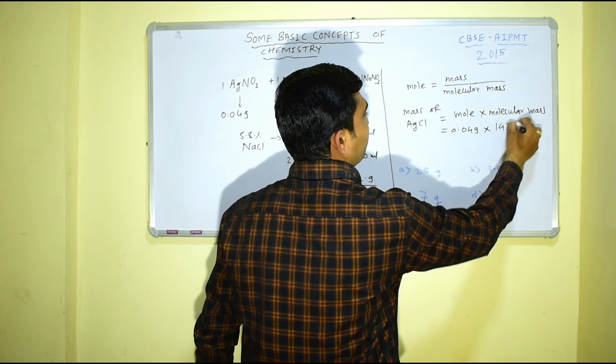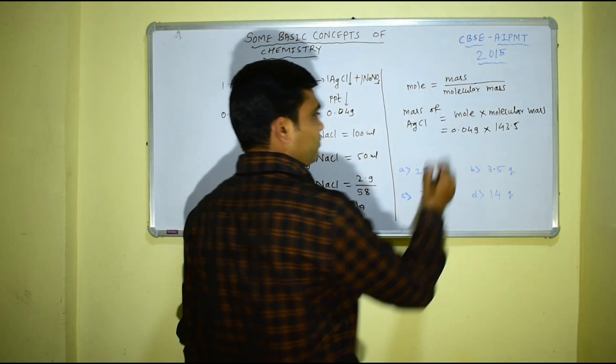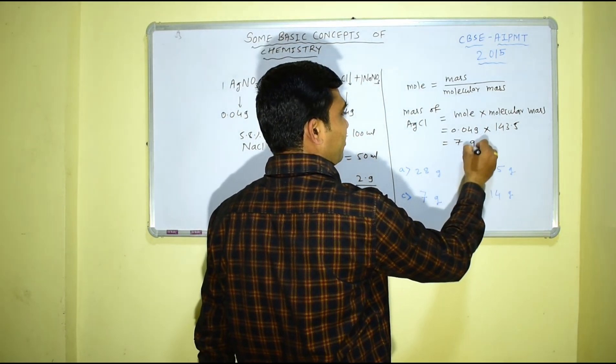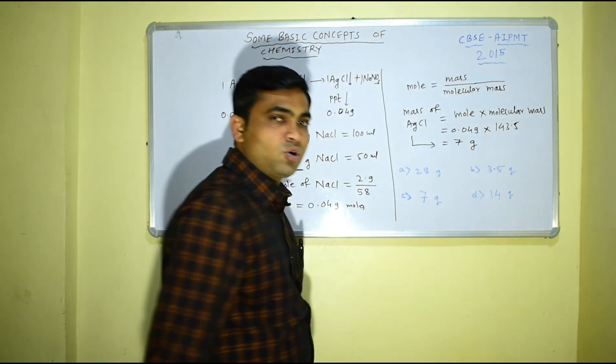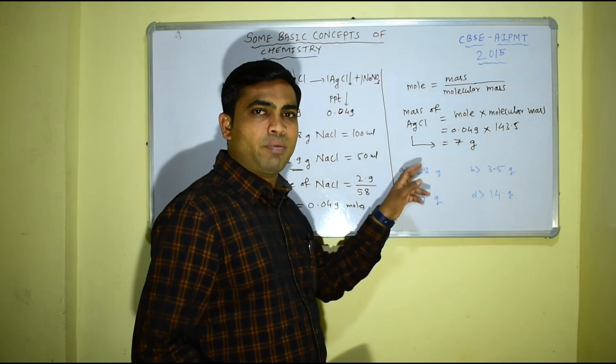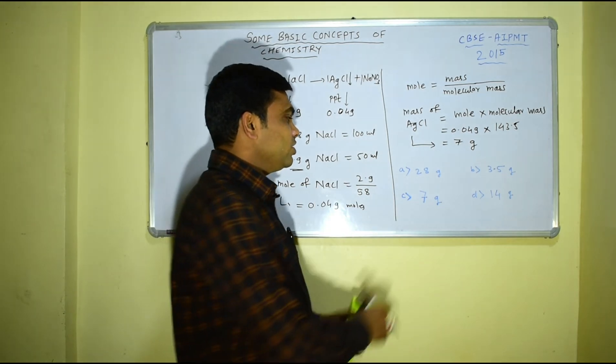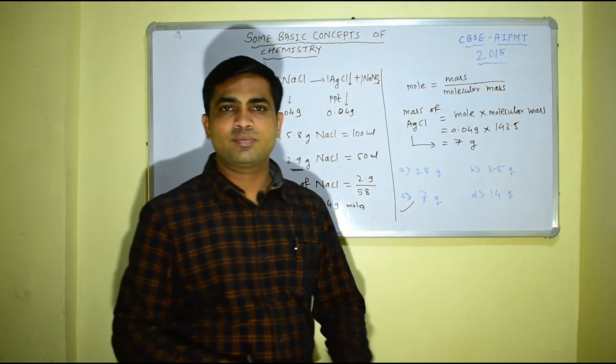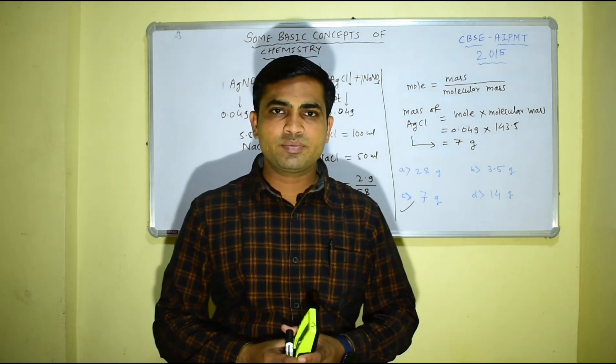Therefore this comes out to be 7 gram. So in this way we have determined mass of AgCl precipitate formed by determining moles. So our correct option is C.